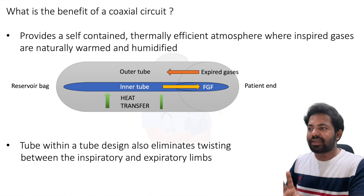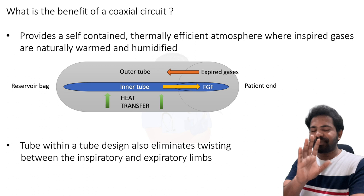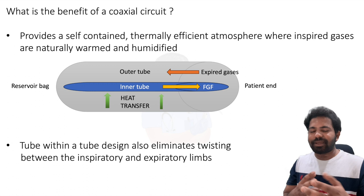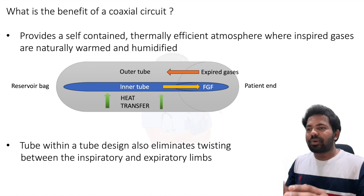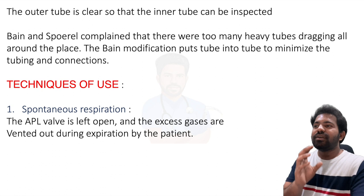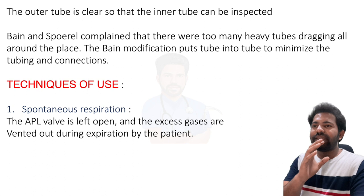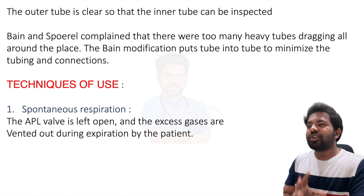The tube-within-a-tube design also eliminates twisting between the inspiratory and expiratory limb — just as a BP cable and ECG cable can become intertwined, two separate limbs risk disconnection, kinking, and twisting. These problems are eliminated by the coaxial model. The outer tube is clear and transparent so the inner tube can be inspected for any damage, holes, or leaks. Bain and Spoerel felt too many heavy tubes were dragging around, so the modification minimizes tubing and connections.